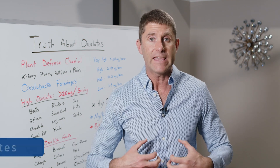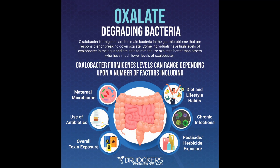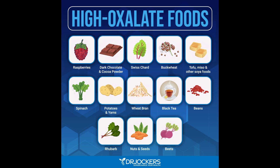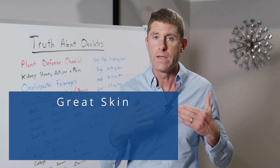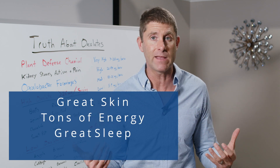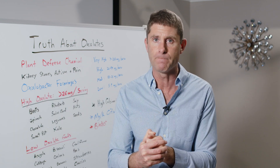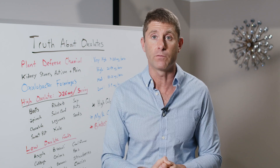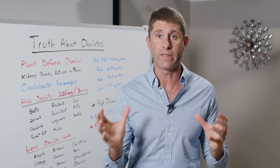Oxalobacter formigenes actually eats the oxalates and produces postbiotic compounds from them that are beneficial for our health. This is why some people can eat a high oxalate diet — tons of salads, spinach, nuts — and they're thriving. Their skin looks great, they have tons of energy, great sleep, mental function is really well, because their body is able to metabolize oxalates effectively. Whereas other people try that same diet and really struggle. The majority of people are somewhere in the middle of that bell curve, where they can handle a certain threshold level.